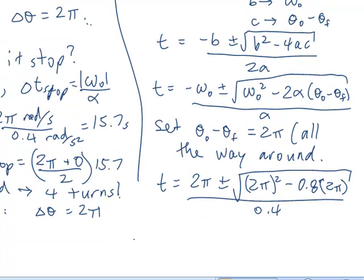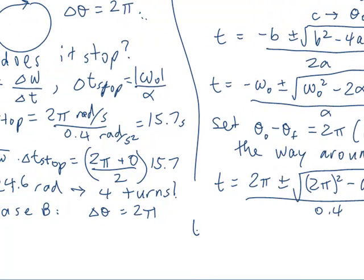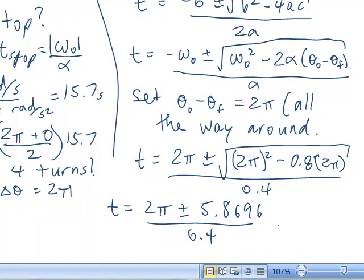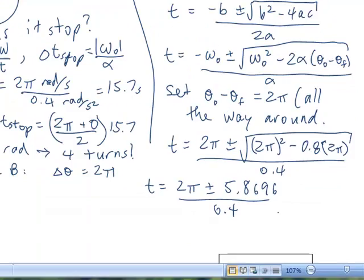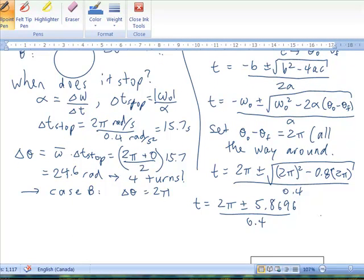Plugging that into my calculator, let's just put the discriminant into the calculator first. I've got 2pi plus or minus 5.869, about 96, all divided by 0.4. So, that turns out to be t equals either, for the plus case, I get 30.4 seconds, or, for the minus case, I get 1.034 seconds.